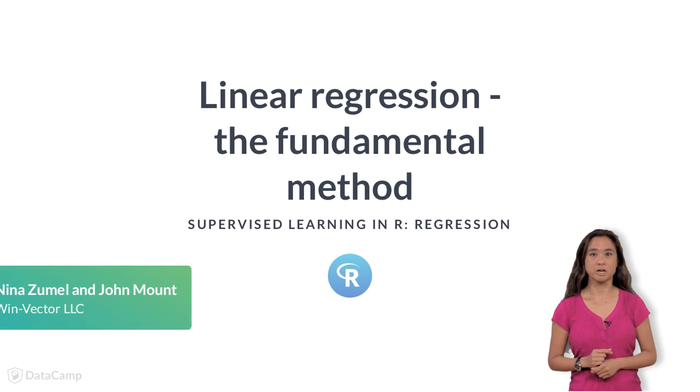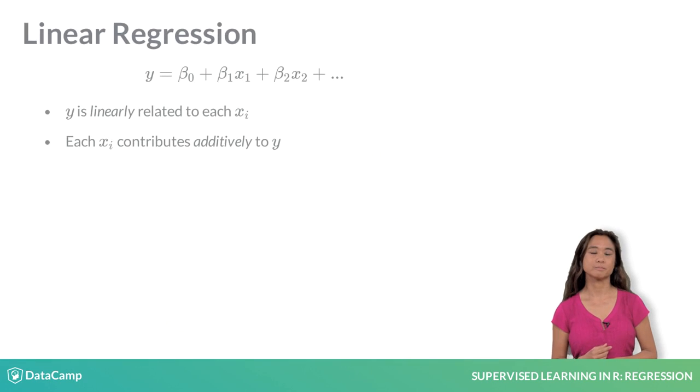Let's start with the most basic regression algorithm, linear regression. Linear regression assumes that the expected outcome is the weighted sum of all the inputs. It also assumes that the change in y is linearly proportional to the change in any x. This is the simplest of the regression methods.